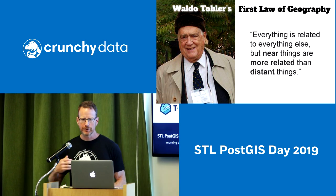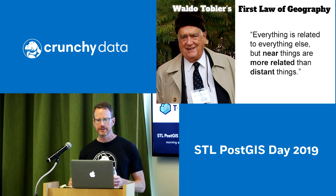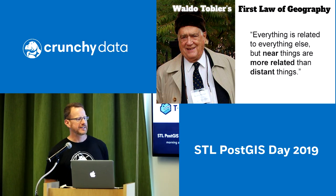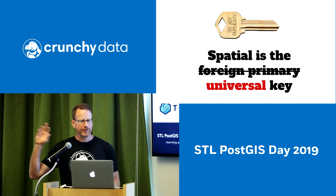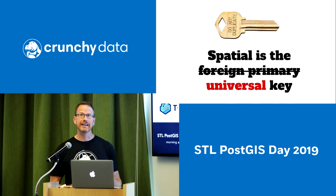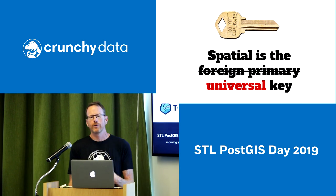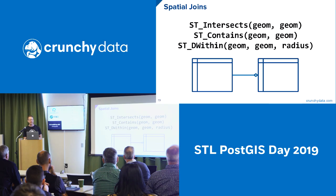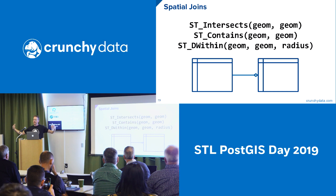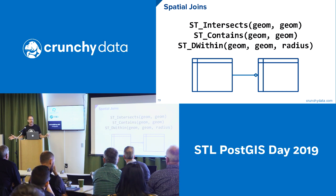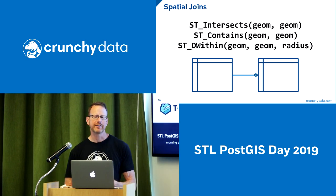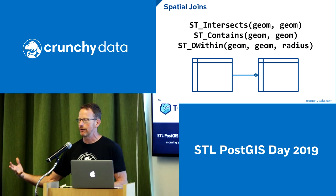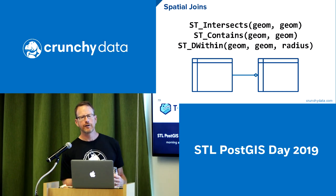My colleague Martin Davis, who works with me at Crunchy in Victoria in the Geospatial Center of Excellence, likes to say that spatial is the universal key. You don't need a foreign key — you've got spatial, a universal key to bring together things which otherwise are disparate. You have two tables, unrelated by anything except that the objects in those tables have a location. If they have a location, you can begin to integrate things which would otherwise be unintegrable.